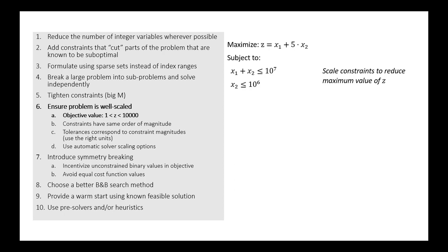So how do we actually scale constraints? Let's look at a clearer example with two new constraints. The first constraint involves coefficients of 10 to the minus 3 and 10 to the minus 5 on the linear terms, with a right-hand side of 10 to the minus 2. Within this constraint, there's an order of magnitude difference of 3 on the coefficients, which is fine. As a rule of thumb, we want to keep differences in orders of magnitude within 6, and ideally keep coefficients in the range of 10 to the minus 3 up to 10 to the 6th power.